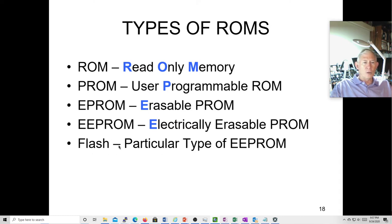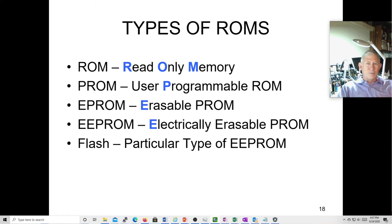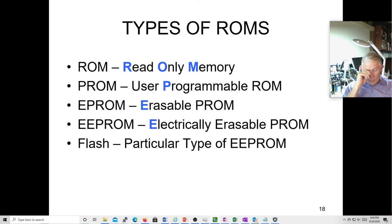We also have flash, which is a particular type of EEPROM. Flash has gone through several generations — the current generation is quad-state flash where every cell can have values of 0, 1, 2, or 3. The main difference between EEPROM and flash is that flash is denser and cheaper, but when you erase it you have to erase more than one byte at a time — maybe eight bytes or bigger chunks. So you can't just erase a single location like you can with an EEPROM.